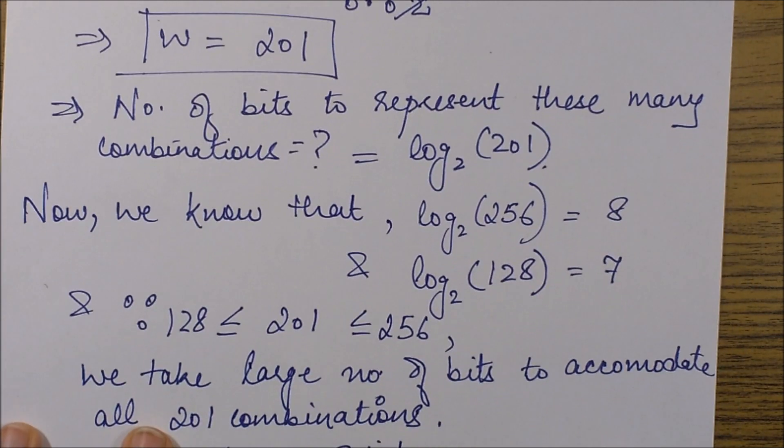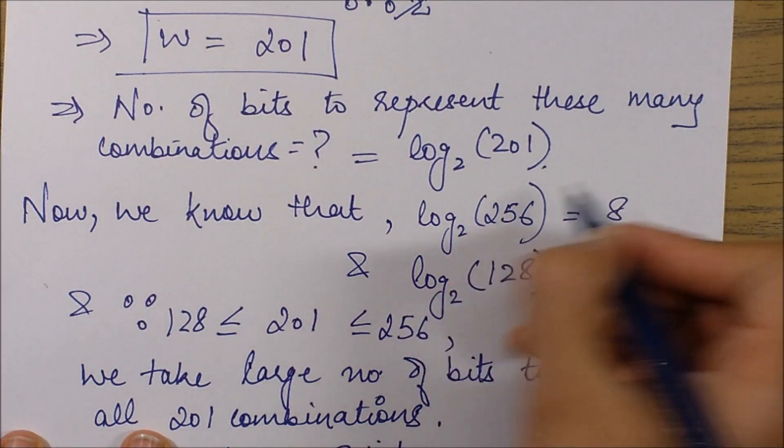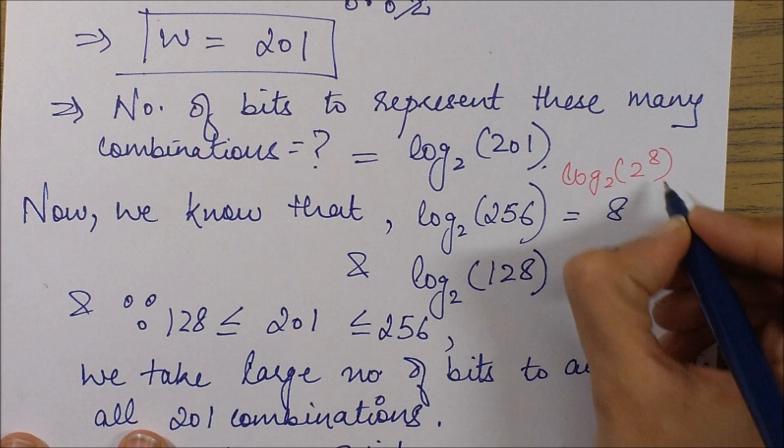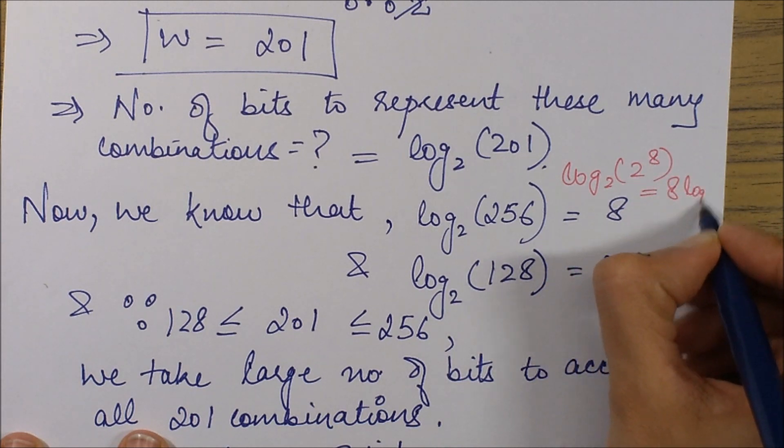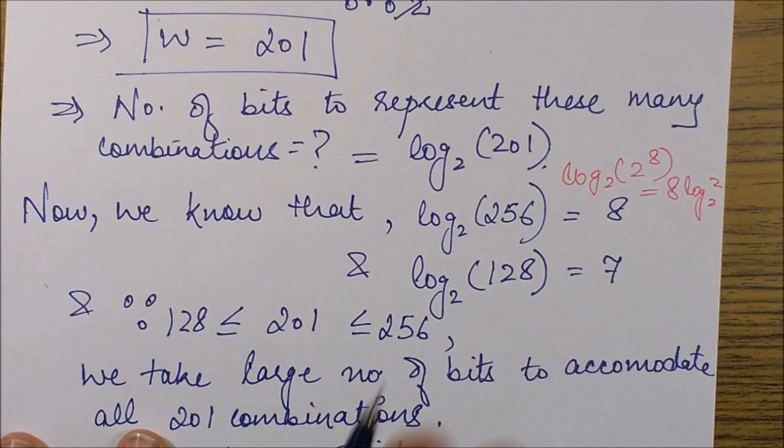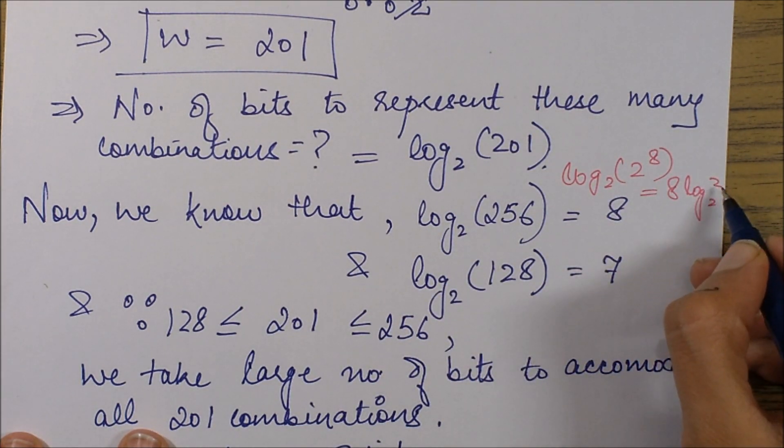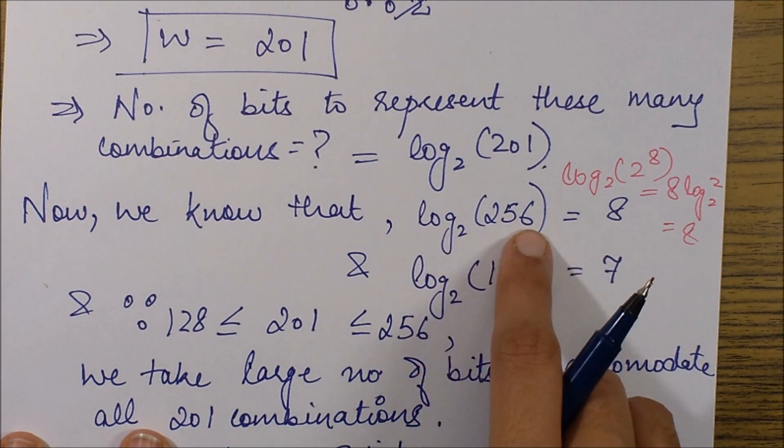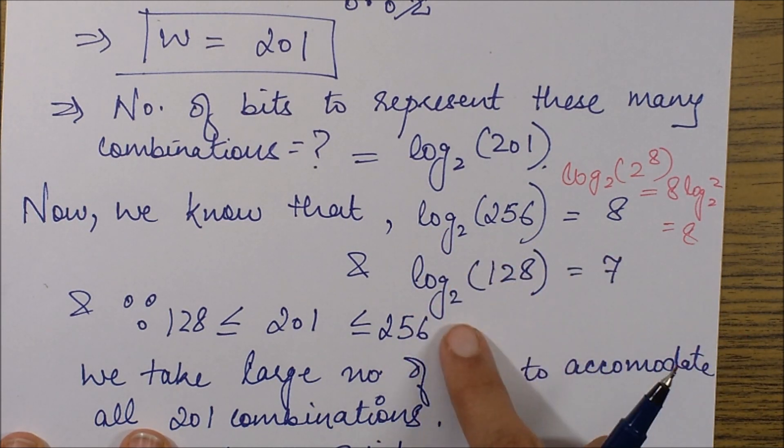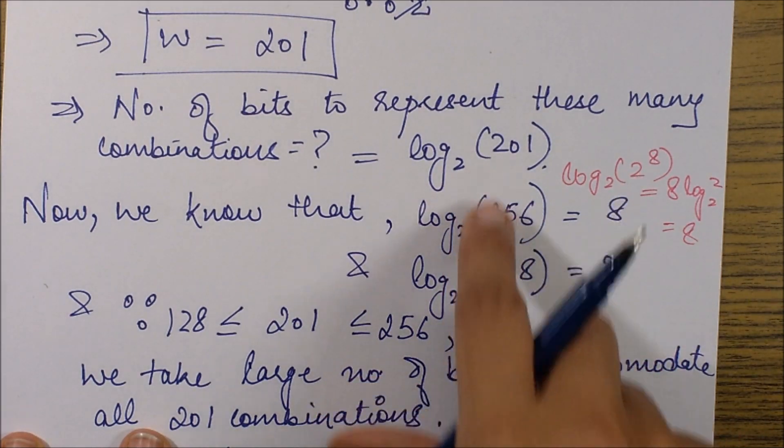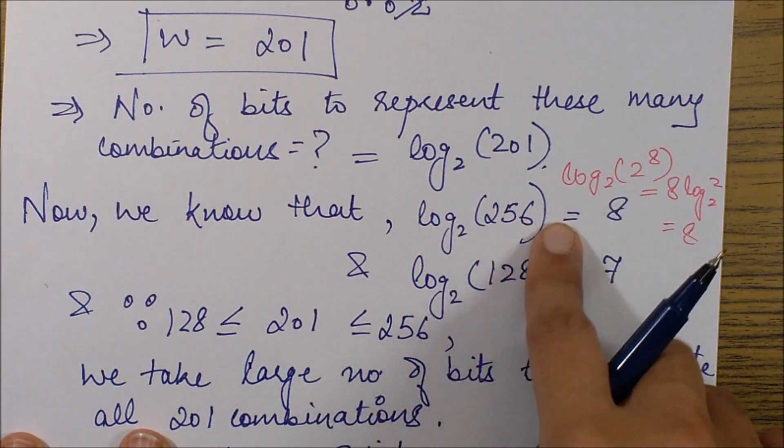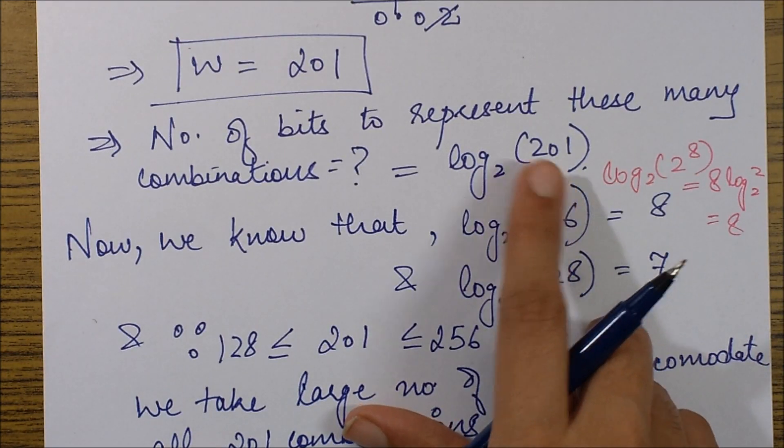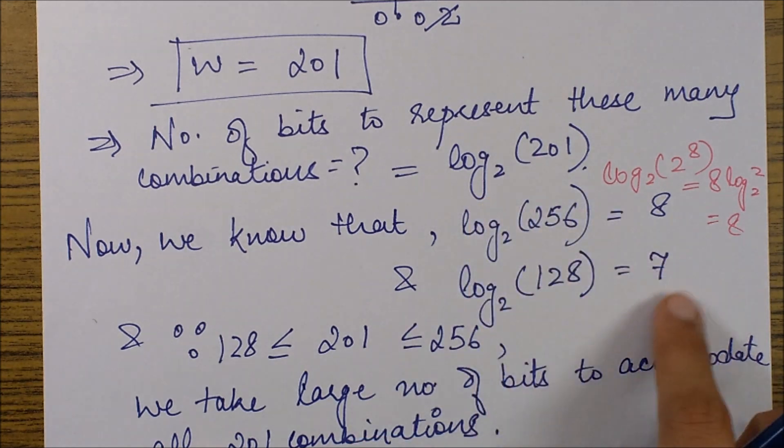We already know that log base 2 of 256—this is basically 2 to the power 8—so if I simplify it, I would write it as 8 × log base 2 of 2, which, from the log property, the power can come in front, and log of the number with the same base is 1, so this is 8. Log base 2 of 256 is 8, and log of 128 base 2 is 7. This value basically comes within these two values, so log base 2 of 201 will also lie within 7 and 8.